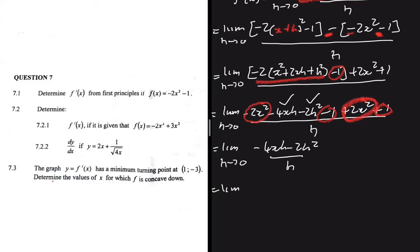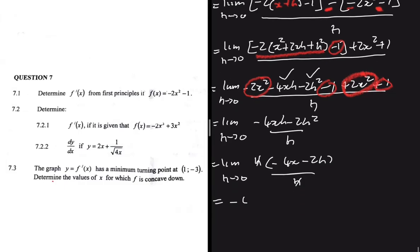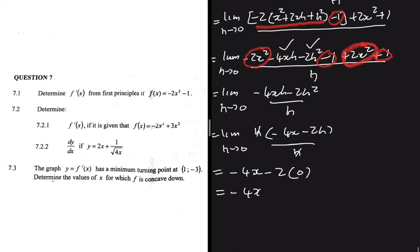We take h as a common factor in the numerator, giving h(-4x - 2h) divided by h. The h's cancel, leaving -4x - 2h. As h tends to 0, this is simply -4x. We can now see that we have the same answer from first principles and from the power rule, so we're convinced that what we did is correct.